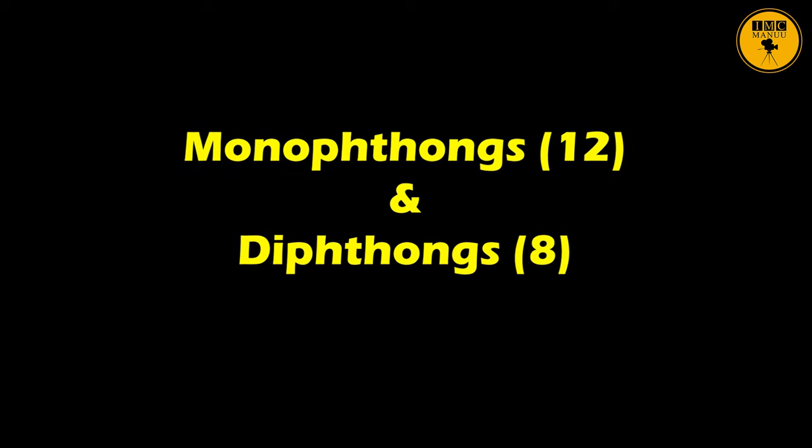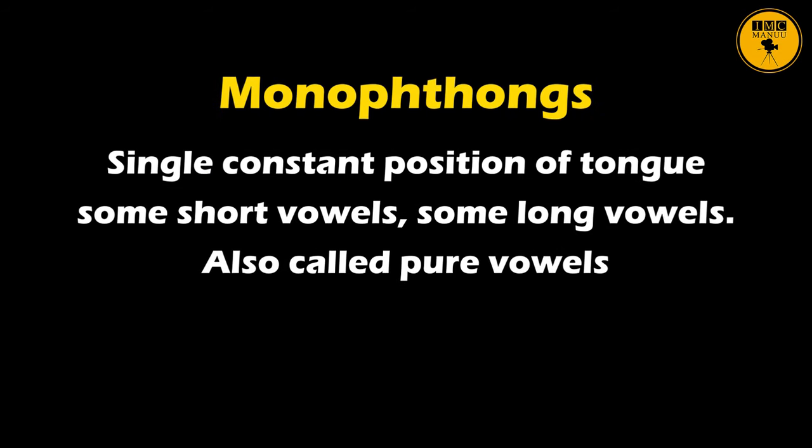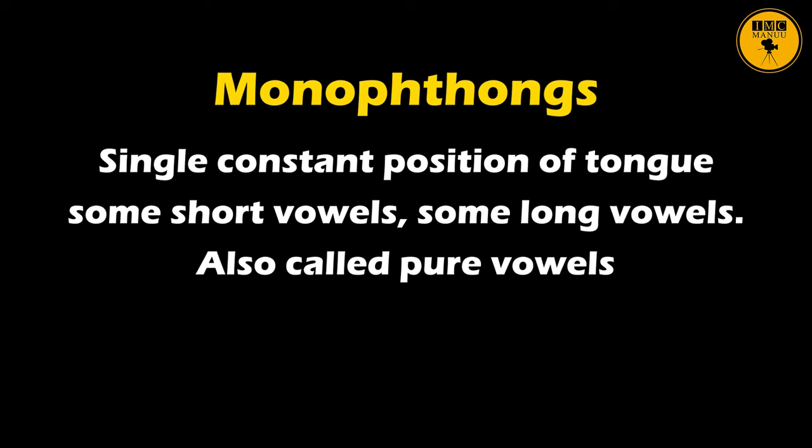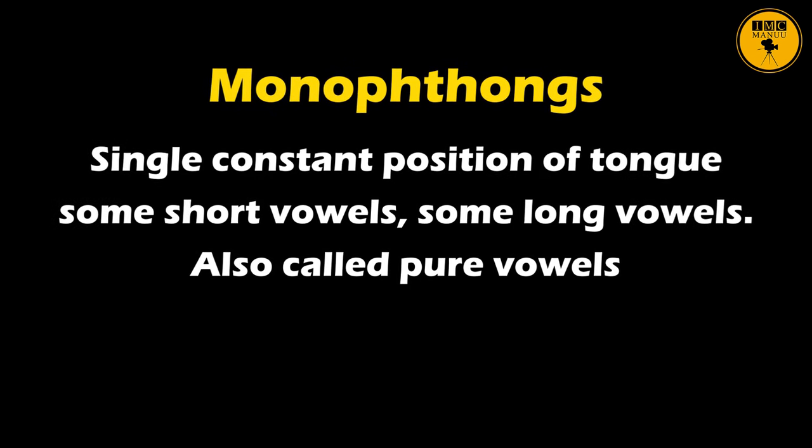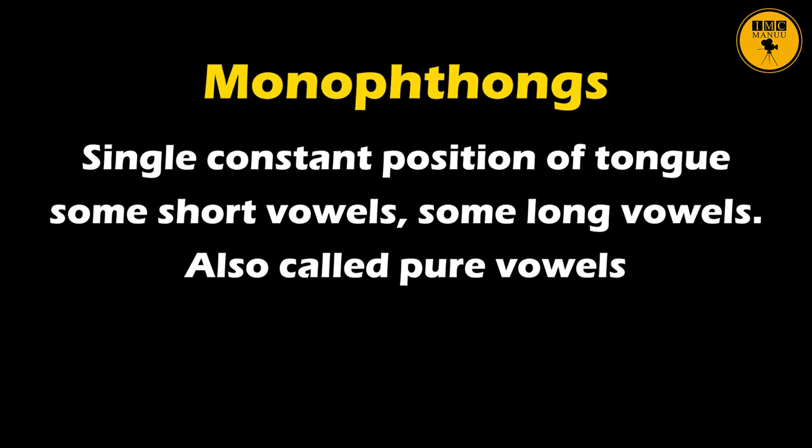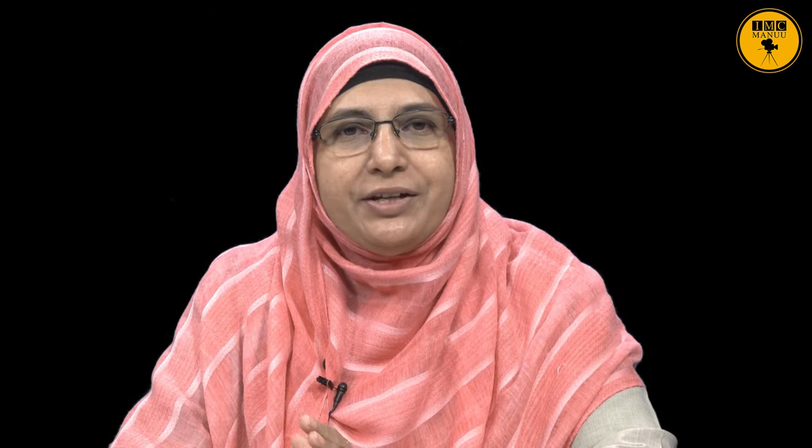Monophthongs are 12 and there are 8 diphthongs. A monophthong is a vowel with a single sound — the position of the tongue does not shift. Monophthongs are also referred to as pure vowels. Let us look at the 12 monophthongs one by one. Please repeat after me for practice. On your screen you will see the symbols for each of these sounds.